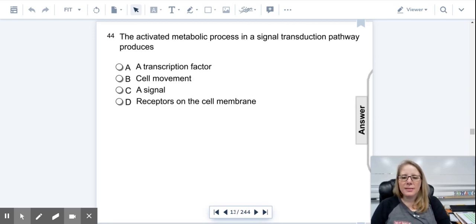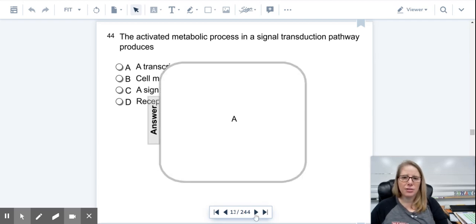The activated metabolic process in the signal transduction pathway produces: A, a transcription factor; B, cell movement; C, a signal; or D, receptors on the cell membrane. So what does the activated process make? Did you say transcription factor? Right. The transcription factor is what is produced to make the cell do what it needs to do.